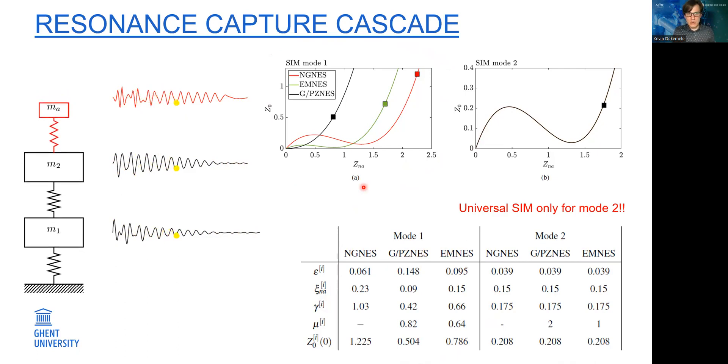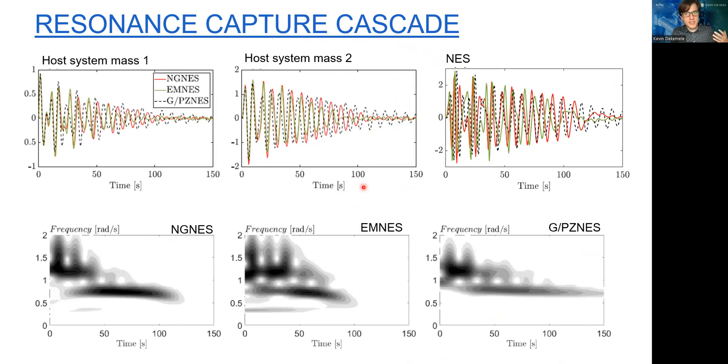I was proven right here when doing the ODE45 simulation again on the two degree of freedom system. On the left you see the vibrations in the first mass, then the second mass, and then the NES. There is a clear difference. This is best seen in these vibrations. You can see the green, which is the electromagnetic NES, is able to reduce the vibrations the fastest, then closely followed by the non-grounded NES.